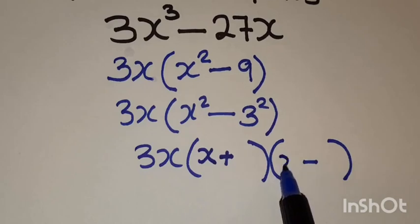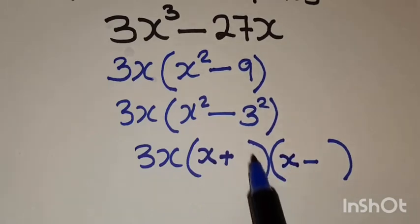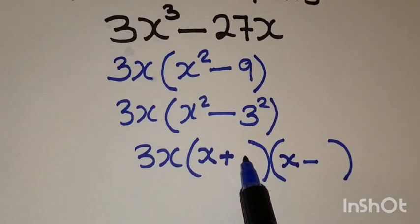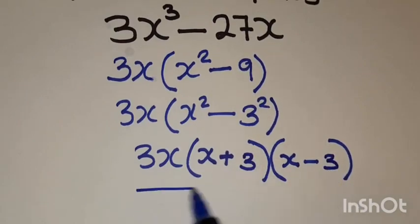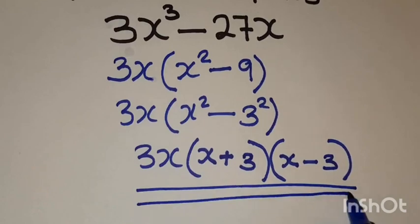The square root of 3 squared is 3. You also write it here. So this is the final answer.